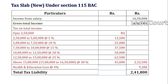Comparing the two: the new tax regime gives a lower tax amount because no exemptions were claimed in this problem. If there had been exemptions, the old regime tax would have reduced further. Since there are no exemptions here, the new tax regime is more beneficial — the total tax liability is 2 lakh 41,800 under the new regime. With this we have come to the end of the session. If you have any doubts, please ask in the comment section. Thank you so much.